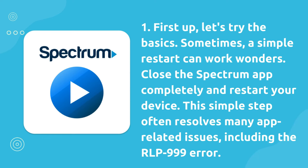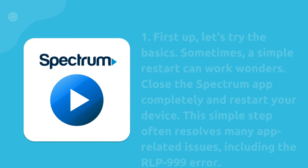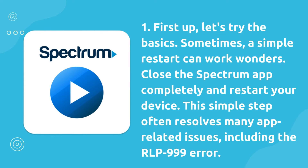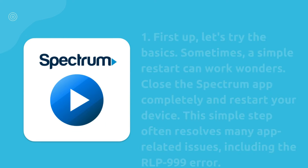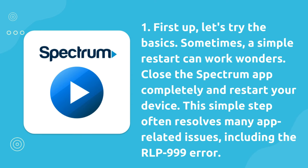First up, let's try the basics. Sometimes a simple restart can work wonders. Close the Spectrum app completely and restart your device. This simple step often resolves many app-related issues, including the RLP 999 error.